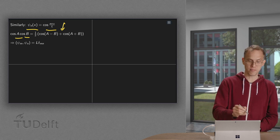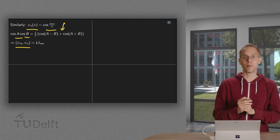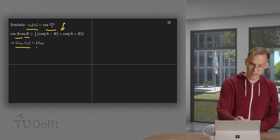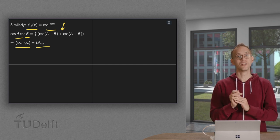We get exactly the same. So psi_m comma psi_n equals again l times delta_mn. That's nice. These are also orthogonal.